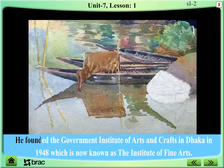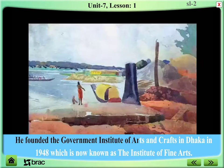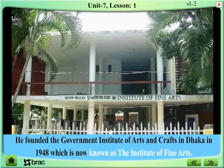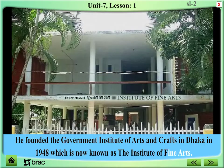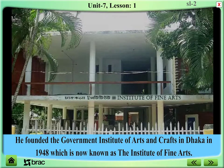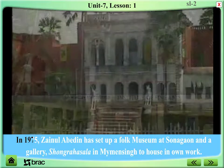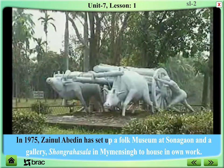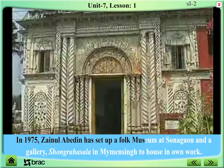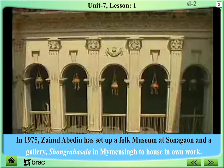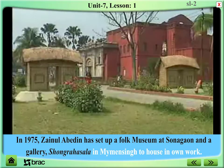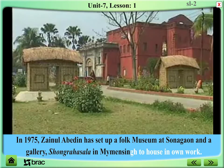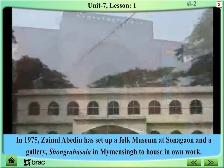He founded the Government Institute of Arts and Crafts in Dhaka in 1948, which is now known as the Institute of Fine Arts. In 1975, Jainul Abidin set up a folk museum at Shonargaon and a gallery called Shongoho Shala in Mymensingh to house his own work.